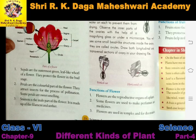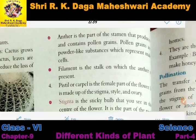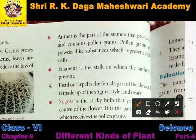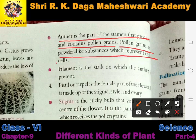Stigma, style, and ovary — these three are the female parts of the flower. So the flower has one male part and one female part. The anther is the part of the stamen that produces and contains pollen grains. Pollen grains are a powder-like substance which represent male cells. The anther produces pollen grains, which are most important for the process of pollination.